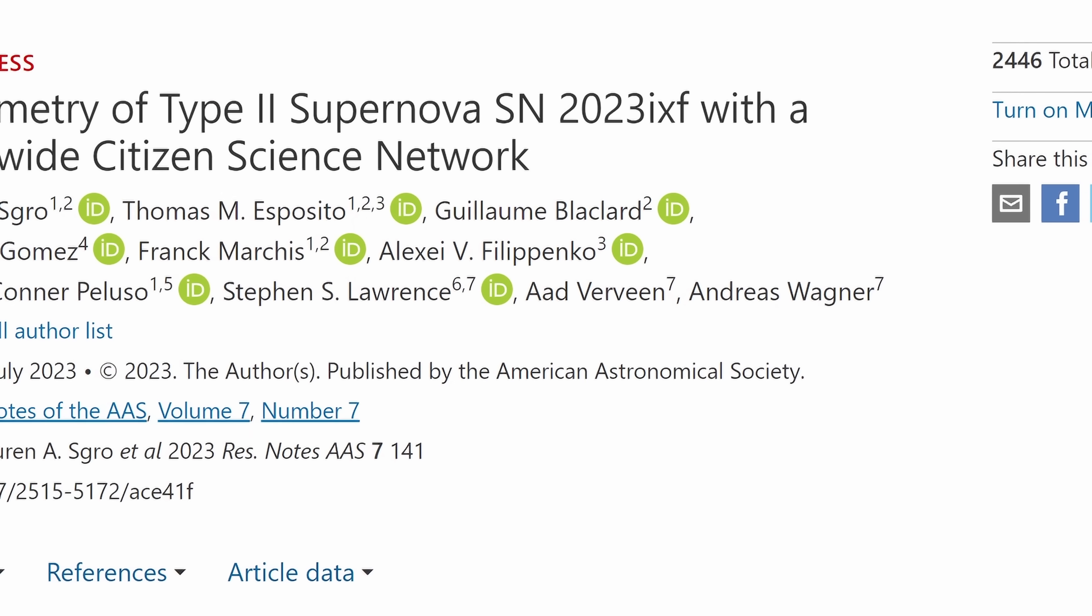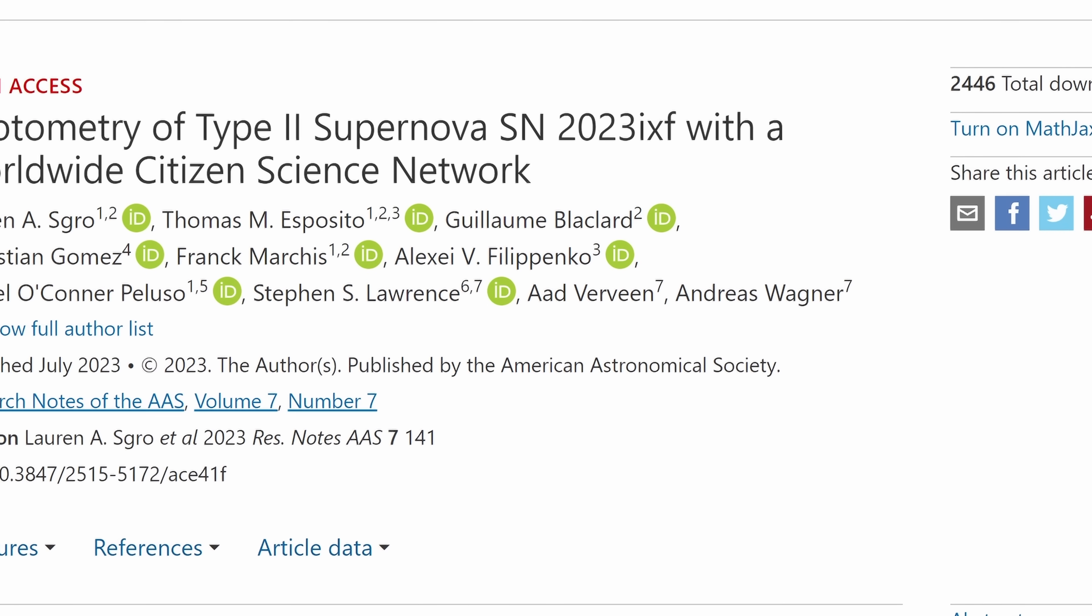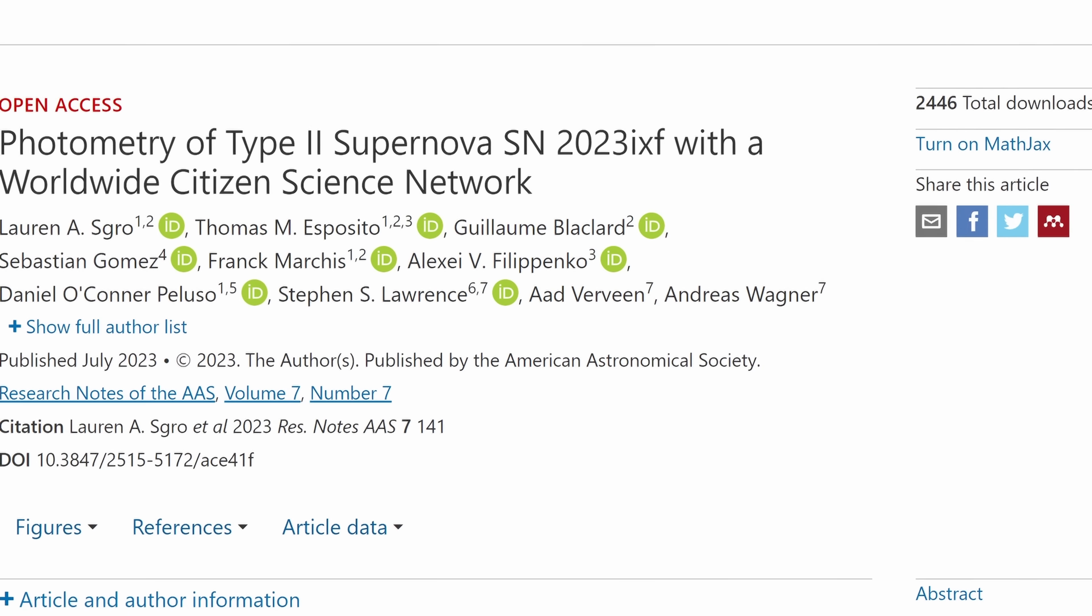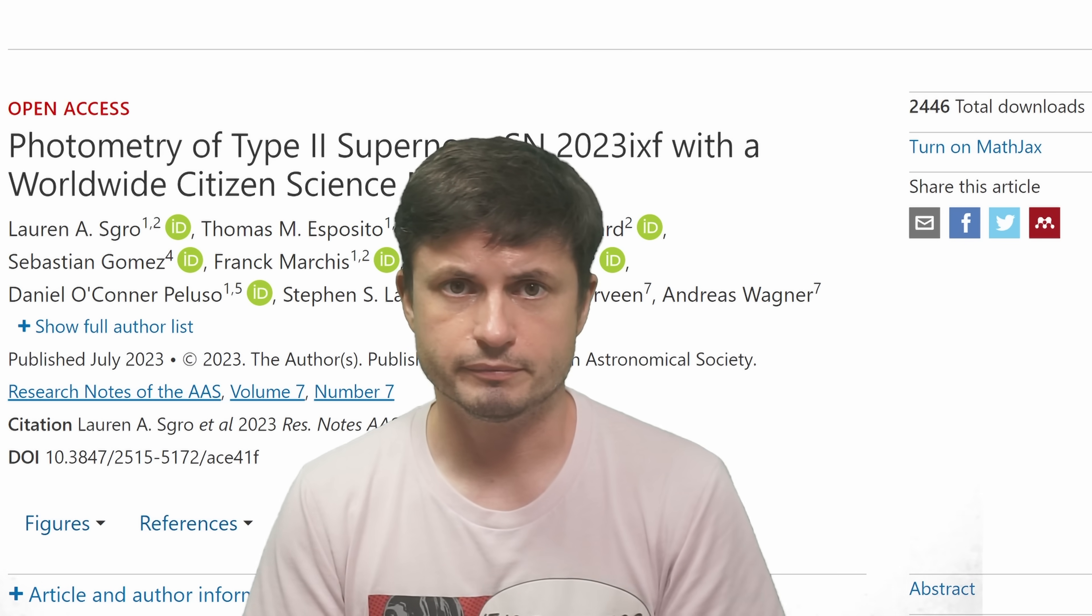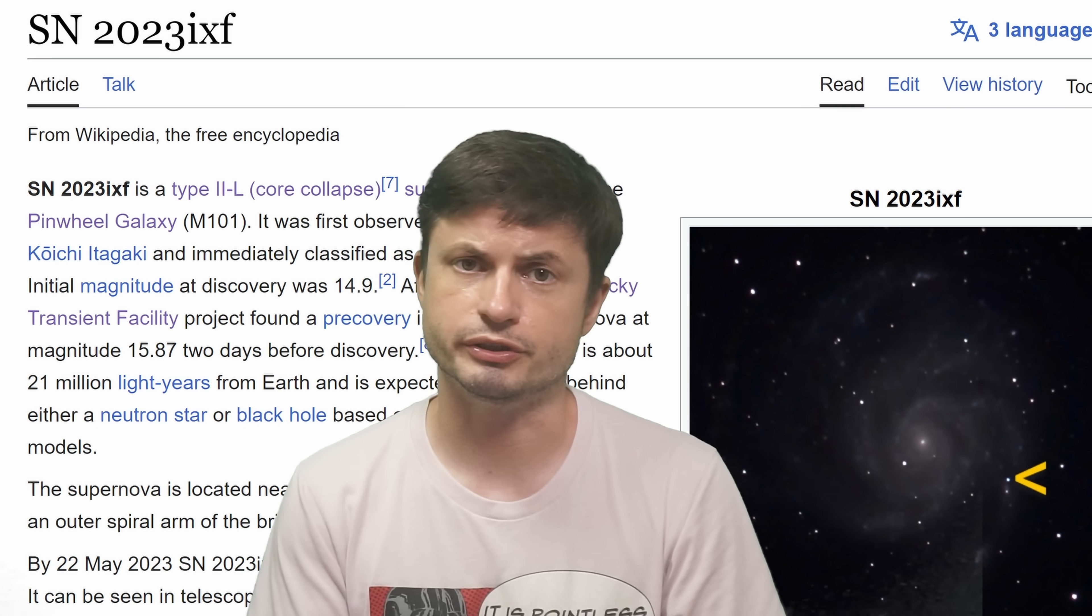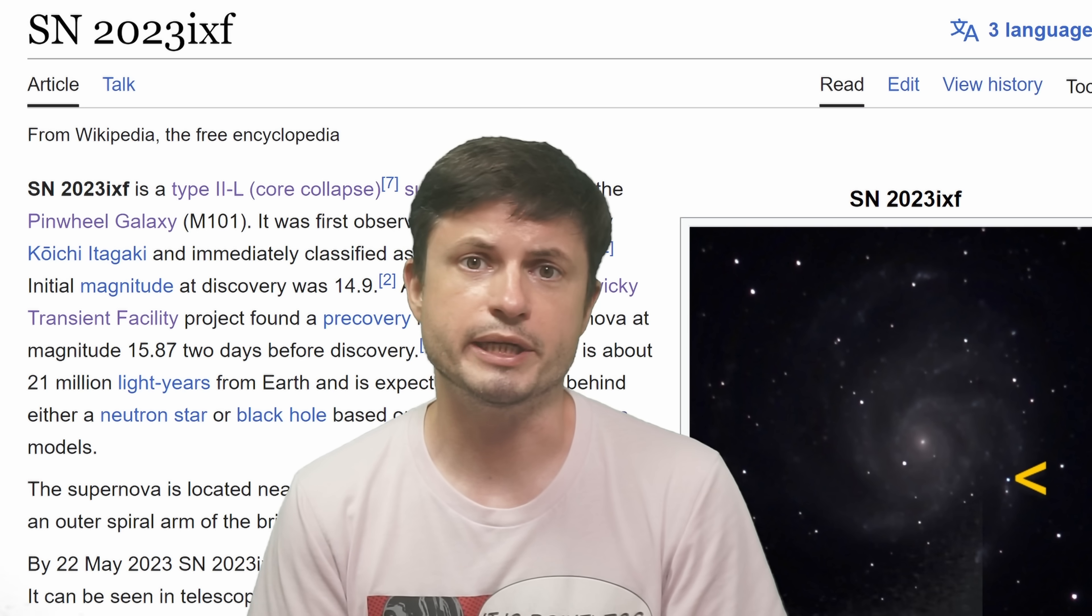The supernova is still visible and will most likely still be visible up until late August of 2023. After this, it's only going to be visible with some of the more powerful observatories. But technically, even now, if you wanted to join the Worldwide Citizen Science Network and become one of the citizen scientists studying this, you still could.